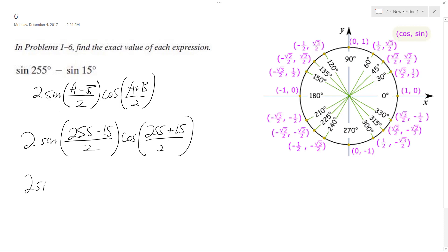And we get 2 times the sine of, that's 240 degrees over 2, cosine of 270 degrees divided by 2.